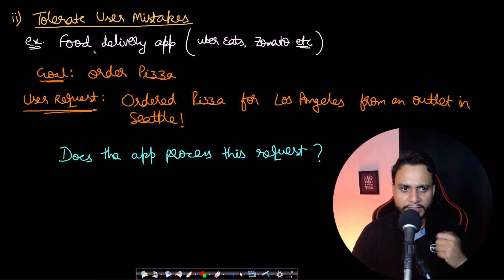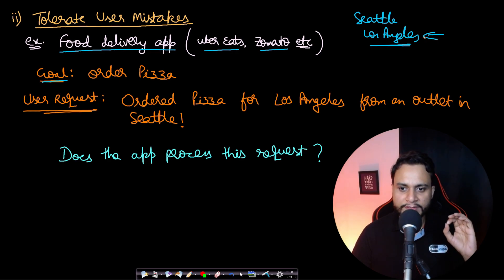Let's take an example of a food delivery app like Uber Eats, Zomato, etc. Our goal is to order pizza. Let's say that previously you were present in Seattle and now you are present in Los Angeles, and you have both addresses saved in your mobile phone in the Uber Eats application. You are ordering a pizza and you are in Los Angeles, but by mistake you have set the address for Seattle and you are ordering pizza for Los Angeles from an outlet in Seattle. By the way, these two cities are far apart.